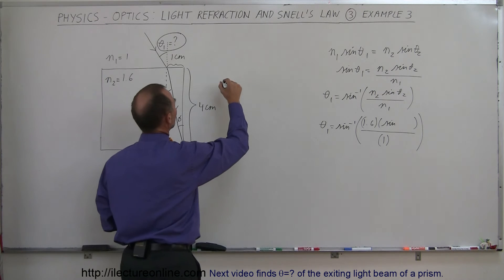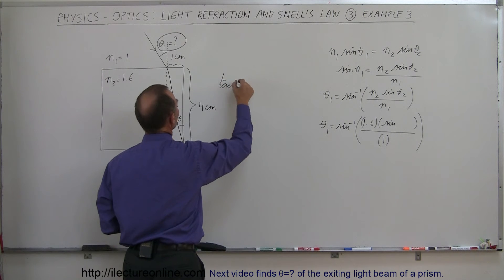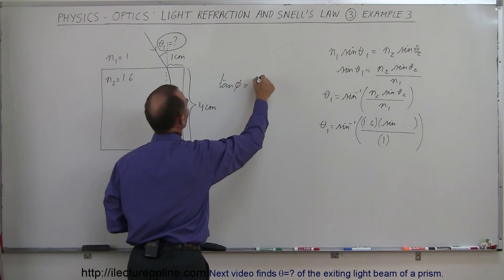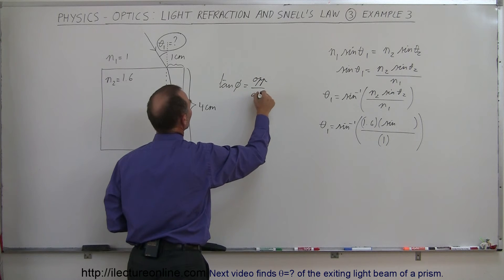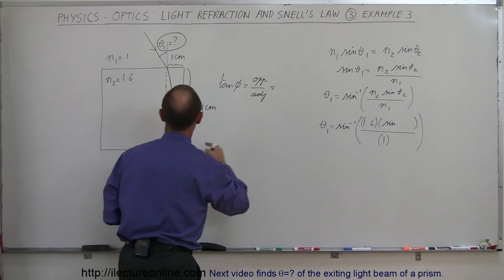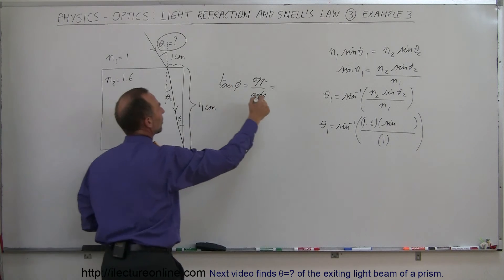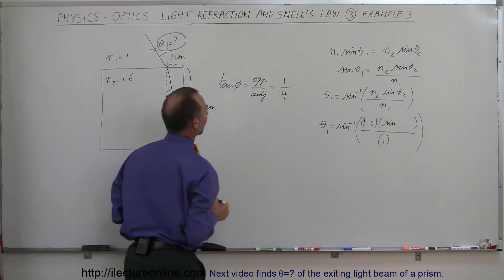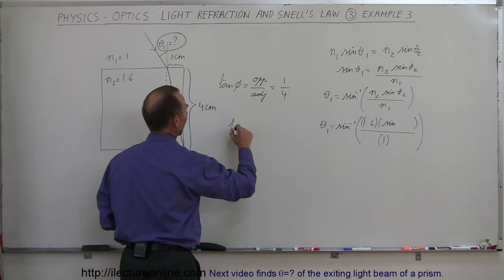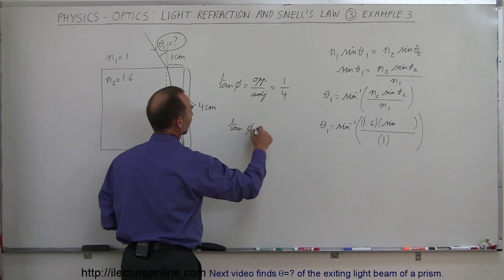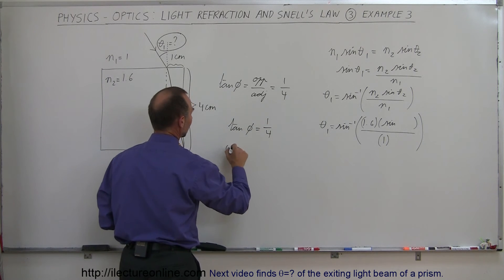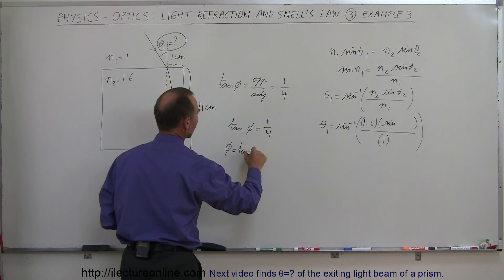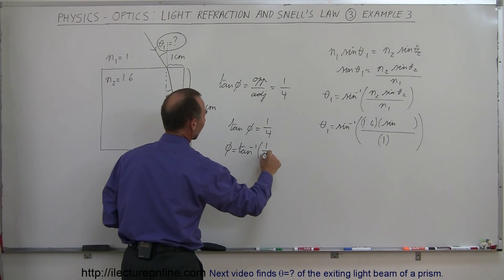Using the tangent, we know that the tangent of phi is equal to the opposite side divided by the adjacent side. In this case, the opposite side to the angle would be 1 centimeter, and the adjacent side would be 4 centimeters. So that's a 1 to 4 ratio. So if the tangent of phi is equal to 1 divided by 4, that means phi is equal to the arctangent of 1 divided by 4.